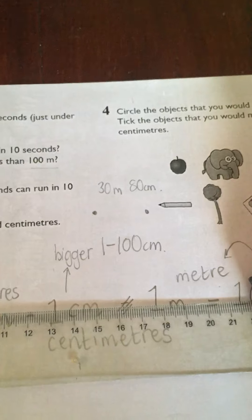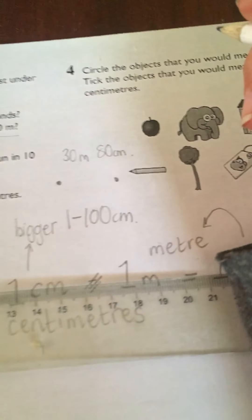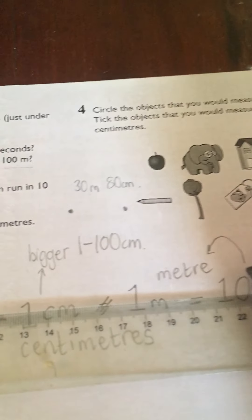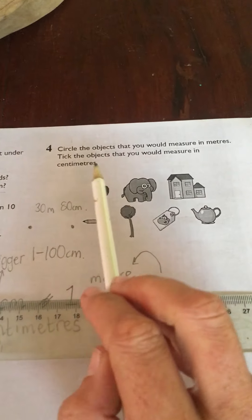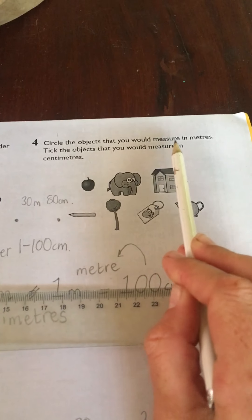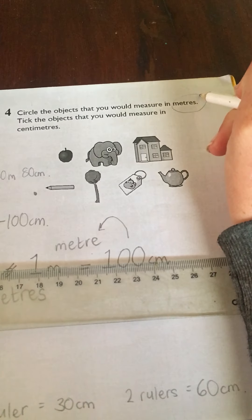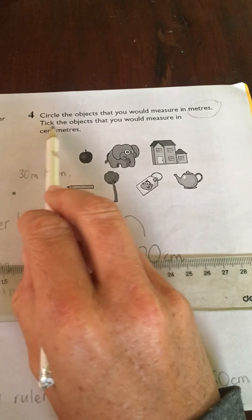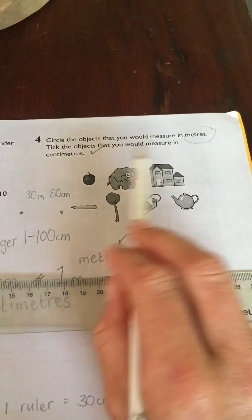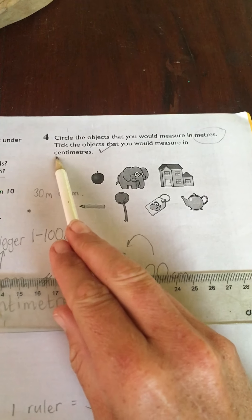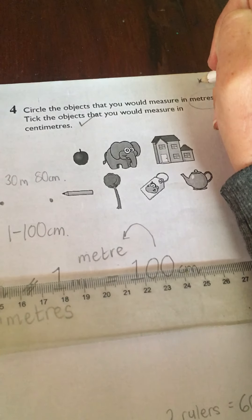Teacher Tammy can probably run 10 in 10 seconds because she's not very fast. Number four - very easy. You're just going to circle the objects that you would measure in meters, so that would be the bigger objects, and you'll tick the objects that you would measure in centimeters, so they will be the smaller objects.